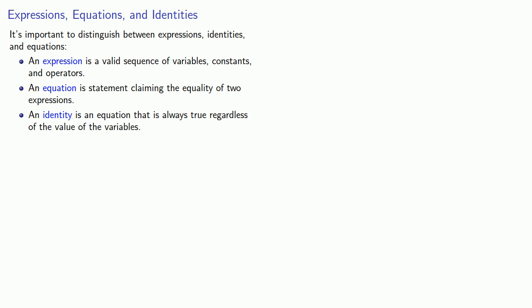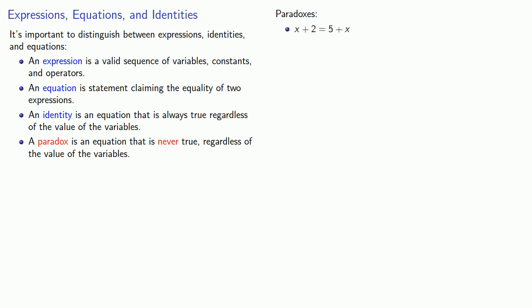A related notion of some importance is the idea of a paradox. A paradox is an equation that is never true, regardless of the value of the variables. So x plus 2 equals 5 plus x is never true. Square root of 3x plus 8 equals negative 5 is never true, because square root always indicates a non-negative number. And secant theta equals 0 is also a paradox, because there is no value for which this is true.